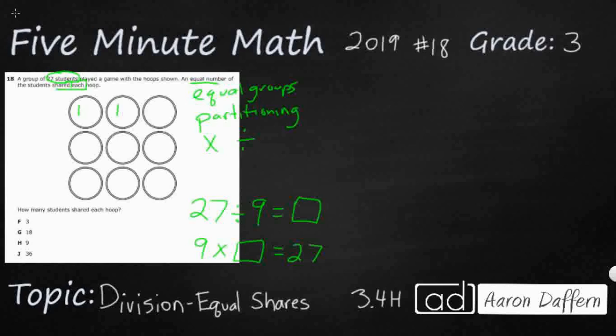So one two three four five six seven eight nine, so I've used my first nine. Ten eleven twelve thirteen fourteen fifteen sixteen seventeen eighteen, that's my second nine. And I think I'm gonna be able to just get one more. Nineteen twenty twenty-one twenty-two twenty-three twenty-four twenty-five twenty-six twenty-seven. So I've used all 27 and how many students shared each hoop? Well I've got three.